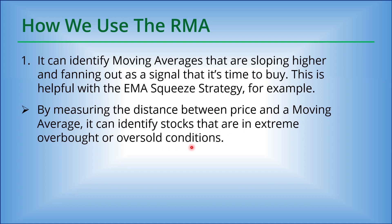By measuring the distance between the price and a moving average, RMA can also identify stocks that are in extreme overbought or oversold conditions. We can search for a condition where price has fallen far below a moving average — for example the 40, 50, or even 100 simple moving average — and identify that as an oversold condition. I'll show you that on the U.S. market.